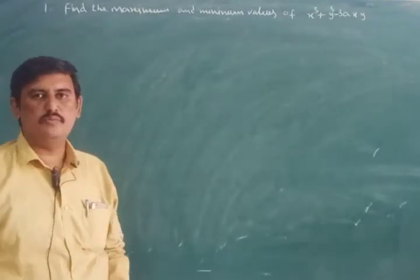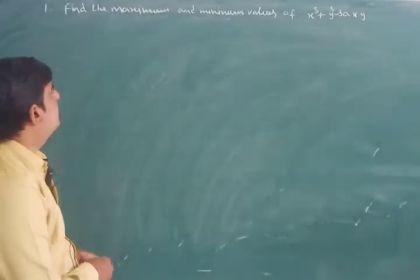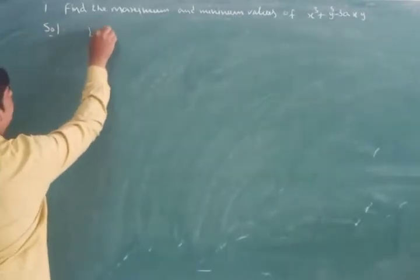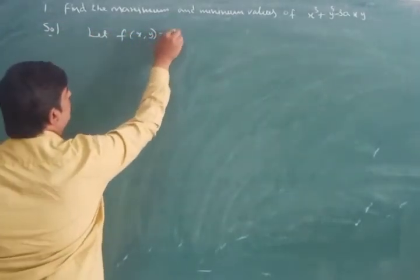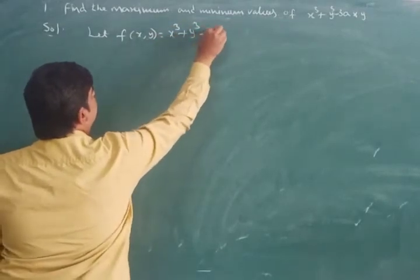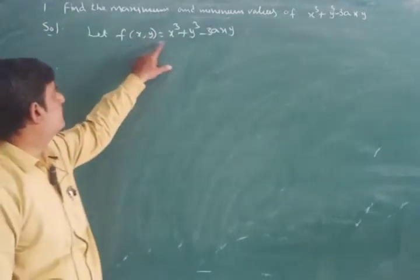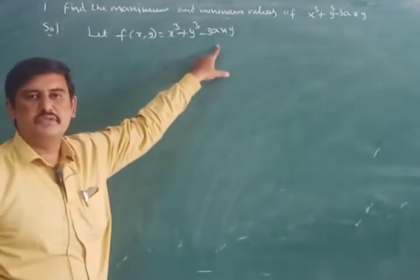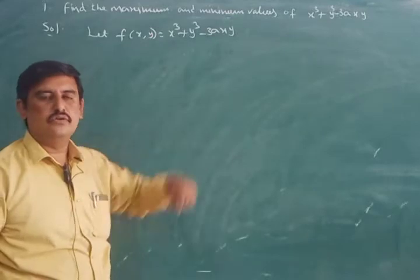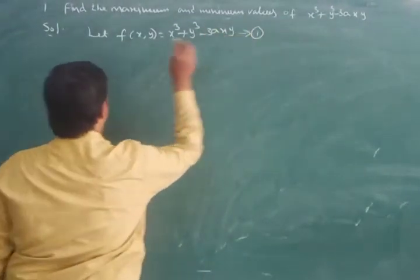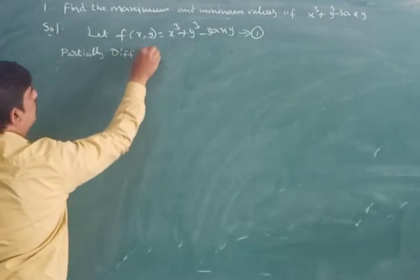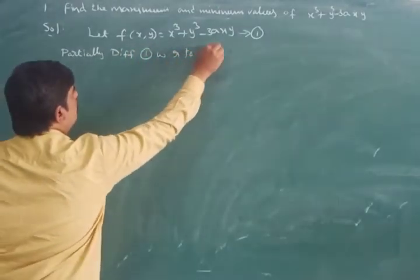See the first problem: find the maximum and minimum values of x³ + y³ − 3axy. Let f(x, y) = x³ + y³ − 3axy. This is a function of two variables x and y. Following the working rule, we first partially differentiate the given function with respect to x and y and equate to zero. Mark this as equation number 1.